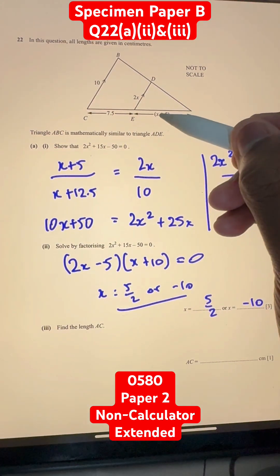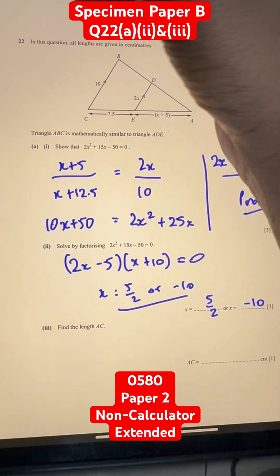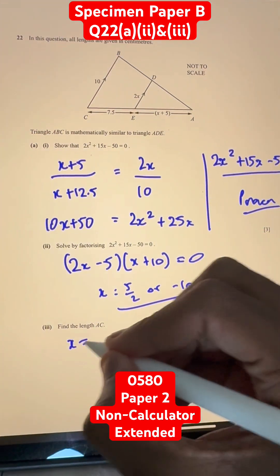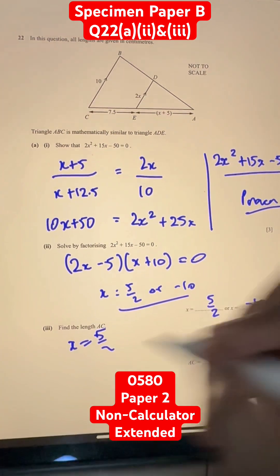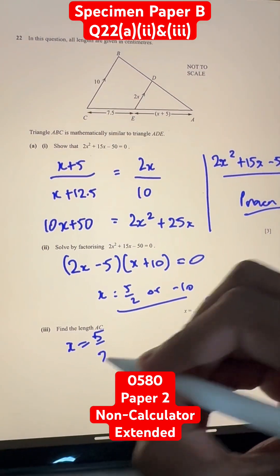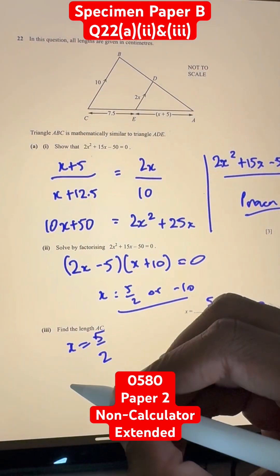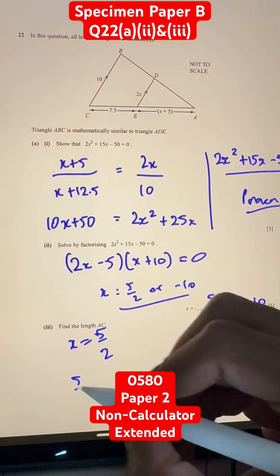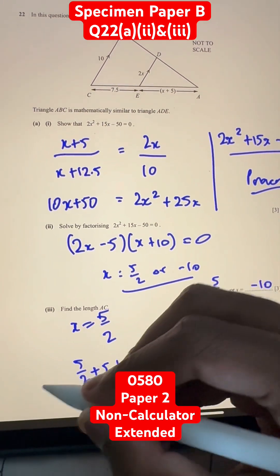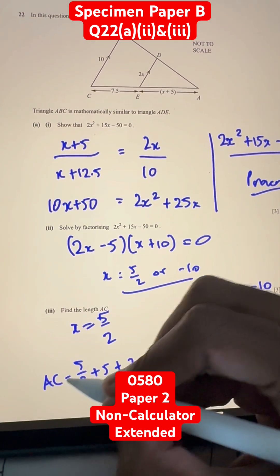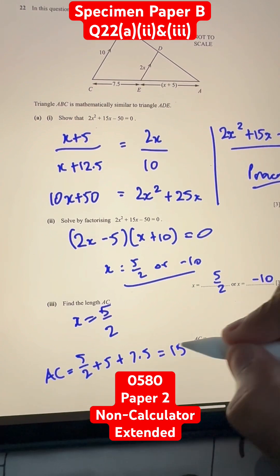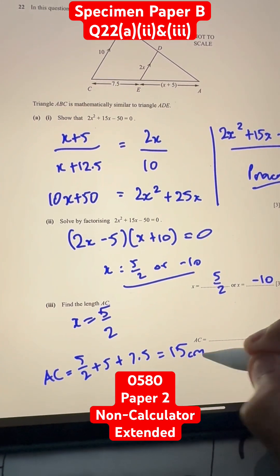Now we can substitute x equals 5 over 2 into the expression. So, 5 over 2 plus 5 plus 7.5 is equal to AC. Therefore, AC is equal to 15 centimeters, and that'll be our answer.